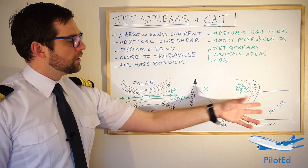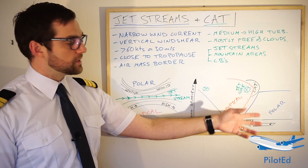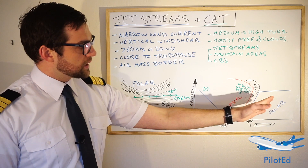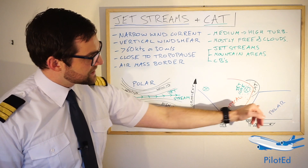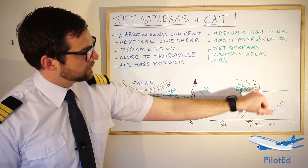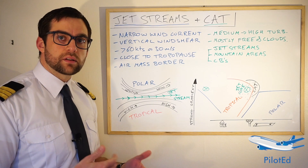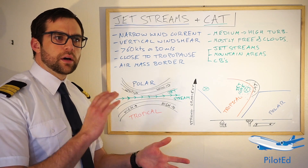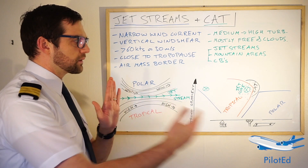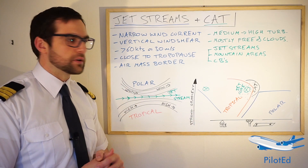From the side-on view of these two air masses, you can see where the clear air turbulence is — generally on the cold side and slightly below the jet core. It's where you find the highest iso-tach gradient. Iso-tachs are lines of equal wind speed, so it's basically where you find the highest gradient between wind speeds and hence the biggest amounts of wind shear.